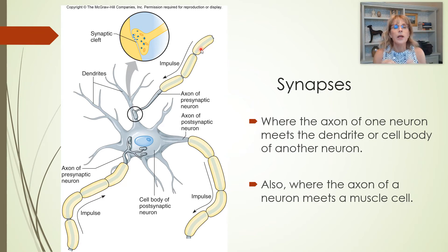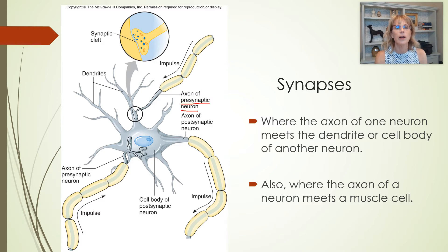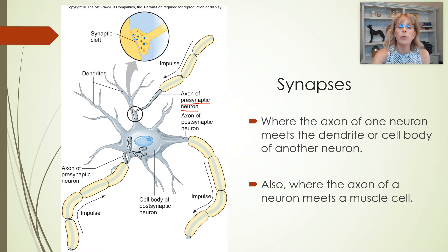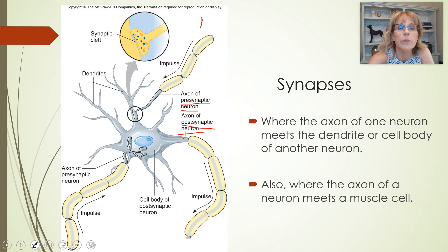The sending cell is called the presynaptic neuron — because it's the one before the synapse, which is where the two cells come in contact. So this is going to be the sender of the message. The postsynaptic neuron is the receiver of the message. And what is the form that the message will take? The message is sent by communication molecules called neurotransmitters.